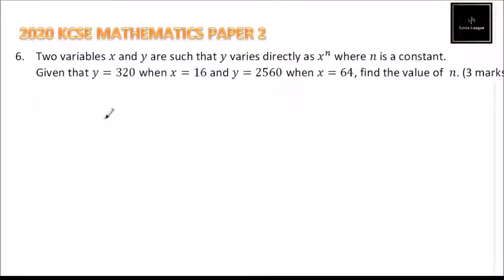This is question number 6, 2020 KCSE Mathematics Paper 2. We are told two variables x and y are such that y varies directly as x^n, where n is a constant. Given that y is equal to 320 when x is 16, and y is equal to 2560 when x is equal to 64, find the value of n.